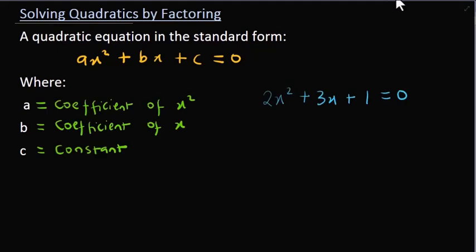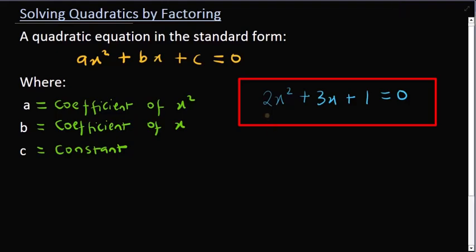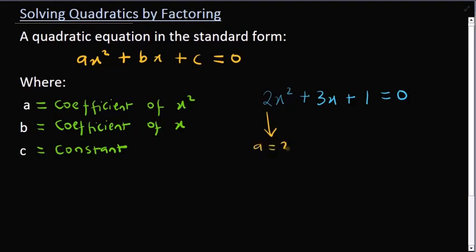For a quadratic equation of the form 2x squared plus 3x plus 1, this value is a — a is equal to 2, b is equal to 3, and 1 is our constant c. So having said that, let's get to the rules and then solve some questions.